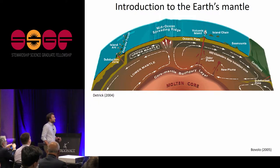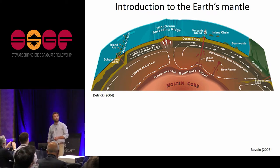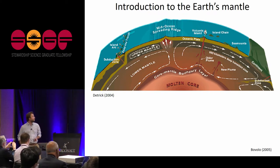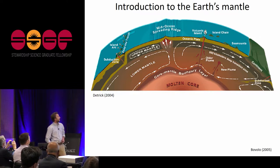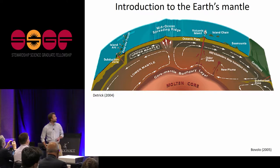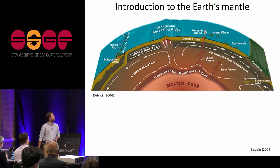I'm going to start by contextualizing my research and giving you an overview of where this is all coming from. This is a cross section of the Earth reminding you of what the mantle is — the large silicate region between the molten outer core and the crust, where we have familiar tectonic features like mid-ocean ridges and subduction zones.